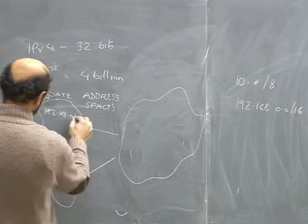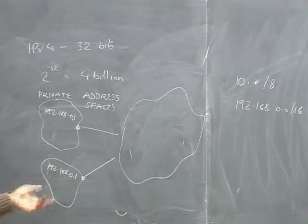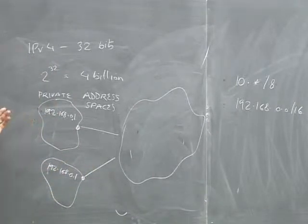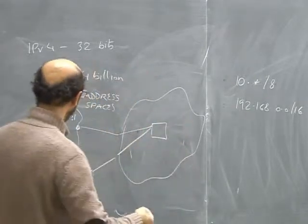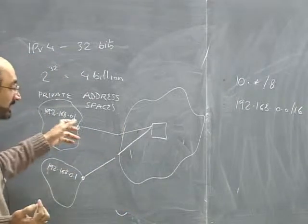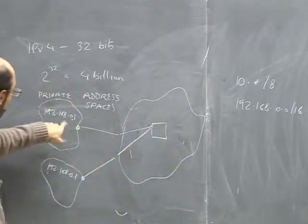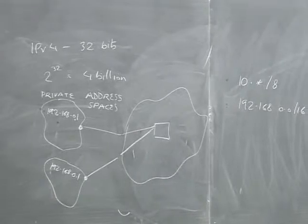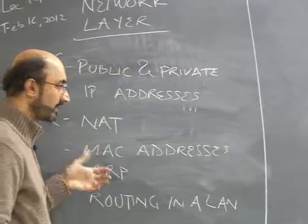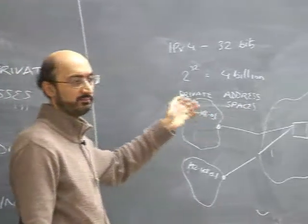Let's take an example. We have 192.168.0.1 here and 192.168.0.1 here as well — the same address repeated twice. That's okay from the source perspective, but imagine they're both connecting to the same public server. When that server sends a packet back, it can't use a 192.168 address because it's prohibited in the public Internet. And second, how does it know whether to send the reply here or there? That's where Network Address Translation, or NAT, comes in.